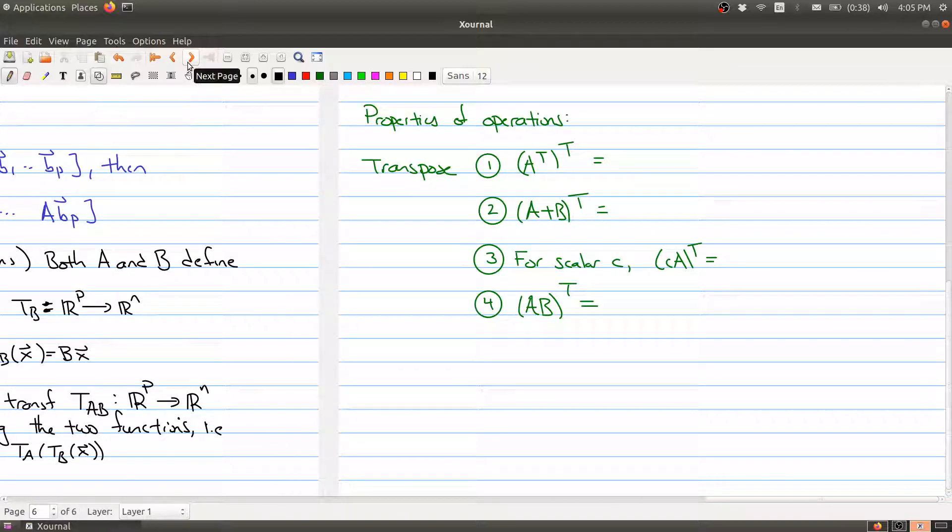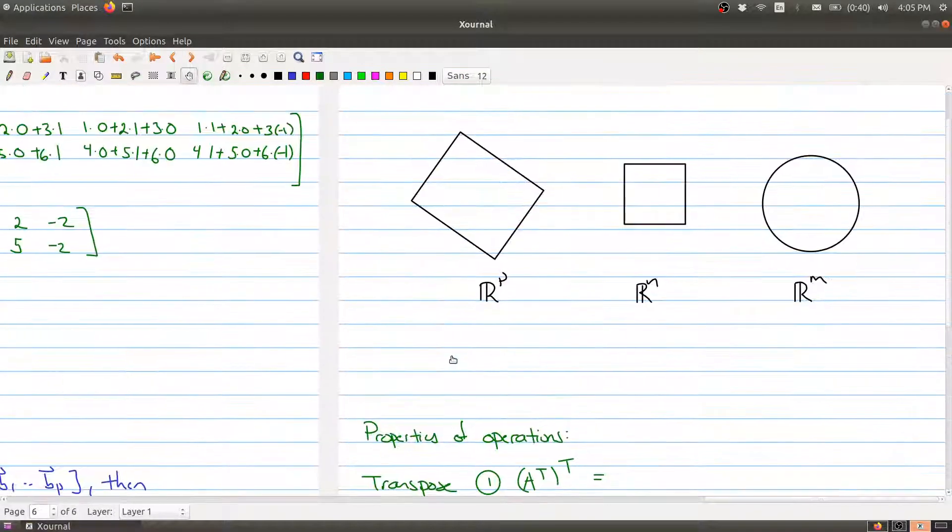And so let me just kind of illustrate this with a picture. Okay? Let's say that we have my three spaces, R^p, R^n, and R^m. The matrix B defines a map from here to here. The matrix A defines a map from this space R^n to R^m. So this is T_A. Okay?